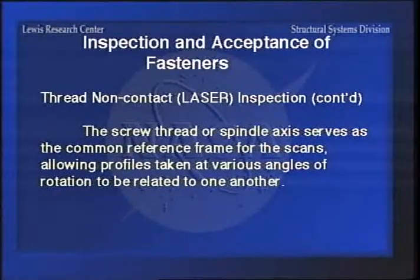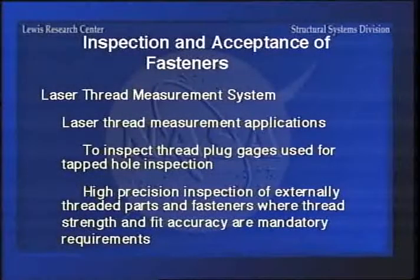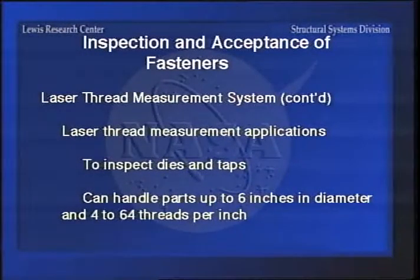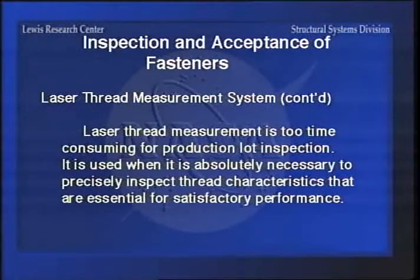The thread axis is the method used for spinning it around so you can check it at different points. These machines are used for inspecting inspection equipment - they're accurate enough to inspect thread plug gauges, go/no-go gauges, dies and taps. They can handle parts up to 6 inches in diameter and 4 to 64 threads per inch. It's time consuming, so you'd use it in places where you don't have very many bolts - for example, on a 747, if you wanted to inspect the super high strength alloy steel bolts holding an engine on, you would run them through an inspection procedure like this and check every one, because it's a super critical application.